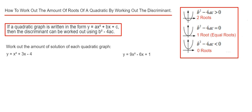Let's have a look at our first example. We've got y equals x squared plus 3x minus 4. So let's write down the values for a, b and c first.